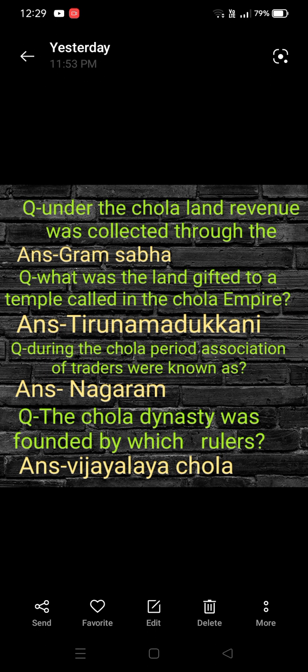Which was the land gifted to a temple called in the Chola empire? The answer is Tirunamundakni. During the Chola period, the association of traders was known as Nagram.